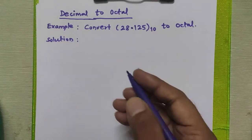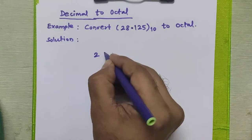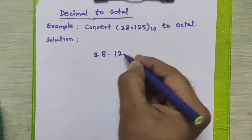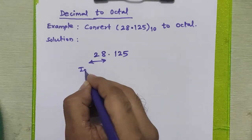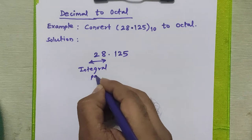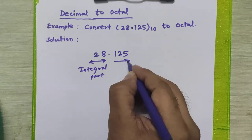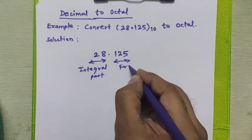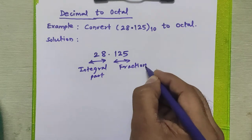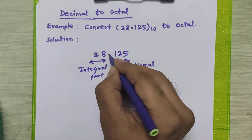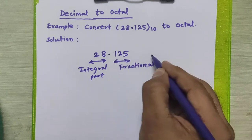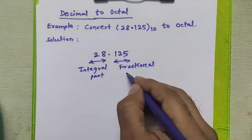The given number has two parts. The first part of this number is called the integral part and another part is called the fractional part. The part which appears before the decimal point is called integral part and the part which appears after the decimal point is called the fractional part.